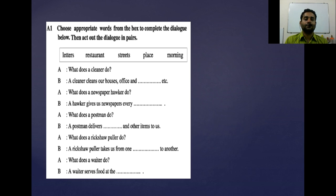You may read out the words from the box. The first one is 'letters,' the second one is 'restaurant,' the third word is 'streets,' then 'place,' and the last word is 'morning.'